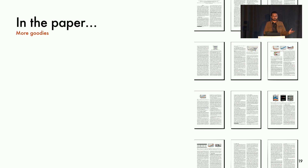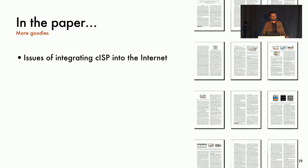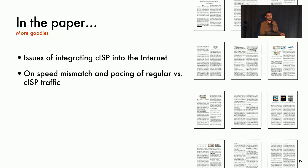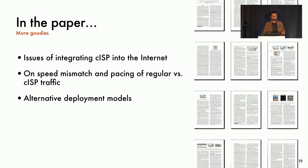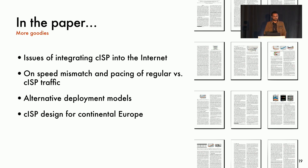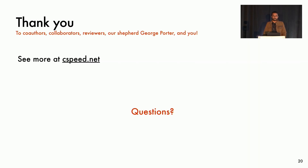There is a lot more in the paper that I wish I had the time to talk about. In the paper, we discussed the issues of integrating CISP with the larger internet, how faster and slower channels play together in the same flow, alternative deployment models that bring the cost of CISP down even further. We also presented a design for CISP for Europe, and there's a lot more. And with that, I will thank you for your attention and take any questions you have.